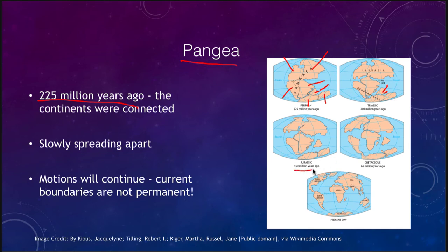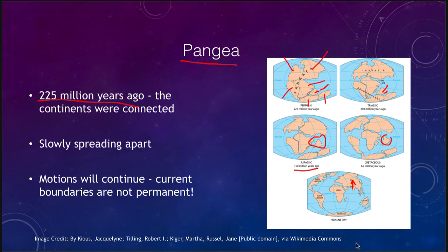Over the next 100 million years, India continued moving northward, eventually colliding into the Eurasian Plate and creating the great collision that formed the Himalayan Mountains. Those kinds of collisions have happened elsewhere too — most big mountain ranges can be associated with past plate motions. The Rocky Mountains and the Appalachian Mountains in North America were both created by previous plate collisions.